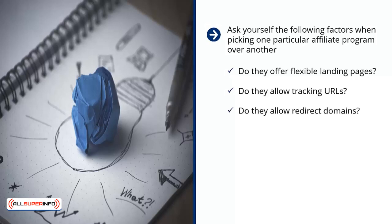Do they allow redirect domains? You don't want affiliate programs to find out where you're getting your traffic, as they can easily just go to where you're getting your traffic and steal it right out from under you. Also, you don't want your end users to see a long link when they put their cursor over a link — this is a turn-off. Make sure you're allowed to use redirect links to clean up and hide long affiliate URLs.